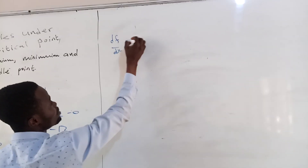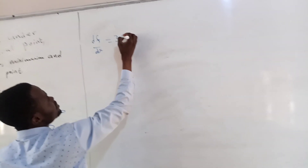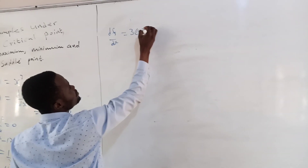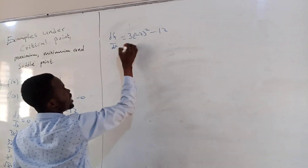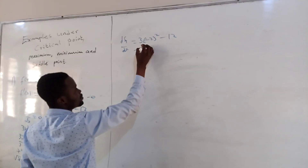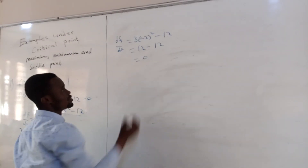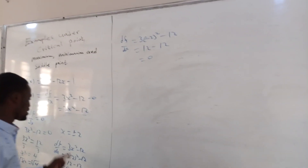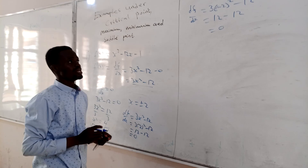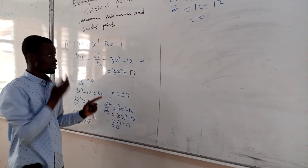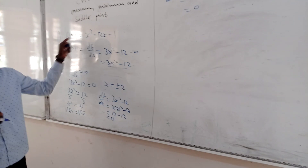So f'(-2) equals 3 times (-2)² minus 12, which gives 12 minus 12, which is equal to 0. This means that both positive and negative 2 are the critical points for this function.